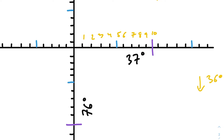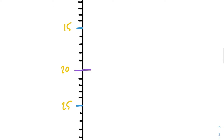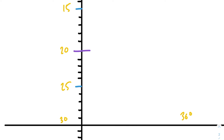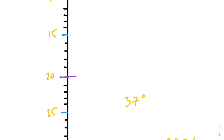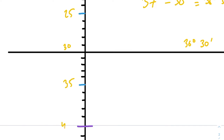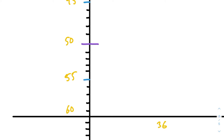Each tick mark represents what's called a minute. Within a degree there are 60 minutes. So every single tick mark is one minute, and once we reach 60 minutes we've moved one degree of latitude or longitude. What this means is if we go south 30 minutes — 5, 10, 15, 20, 25, 30 — we're not at 36 degrees yet. We're at 36 degrees and 30 minutes. We've taken 37 degrees and subtracted 30 minutes. If we go down another 30 minutes — 45, 50, 55, 60 — then we've reached 36 degrees latitude.